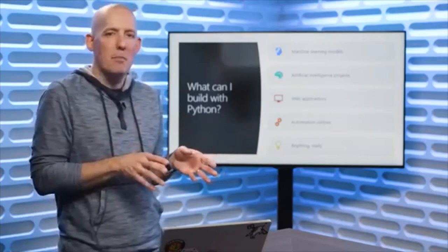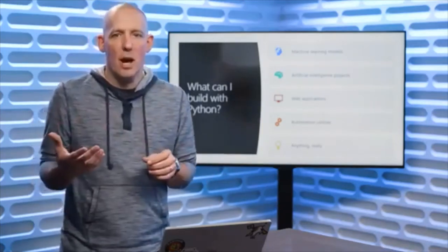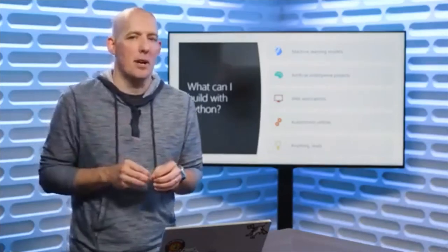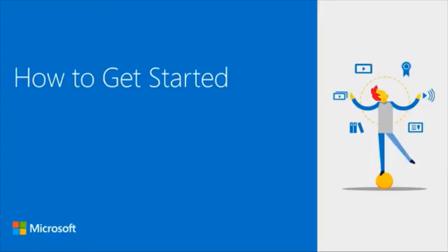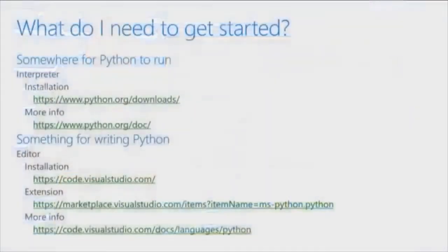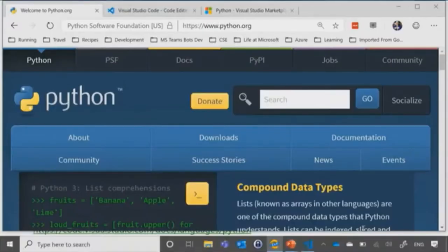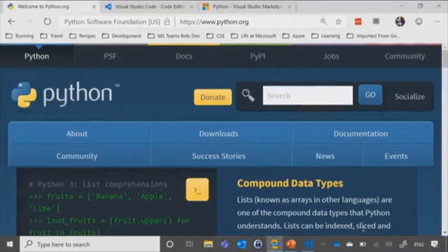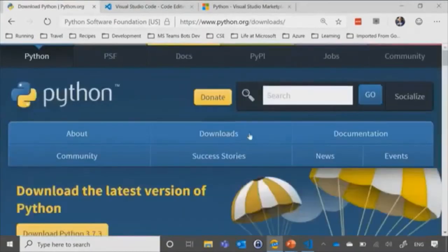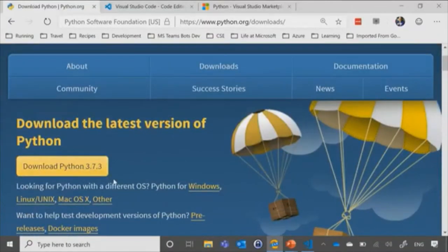Now that you know a little bit about Python, we'll close off here and in the next video, talk about what you'll need to start writing your Python code. The first thing we're going to need is somewhere for Python to run. Python is an interpreted language, so you will need a runtime in which Python can execute. All you need to do is head on over to python.org/downloads and grab it from there.